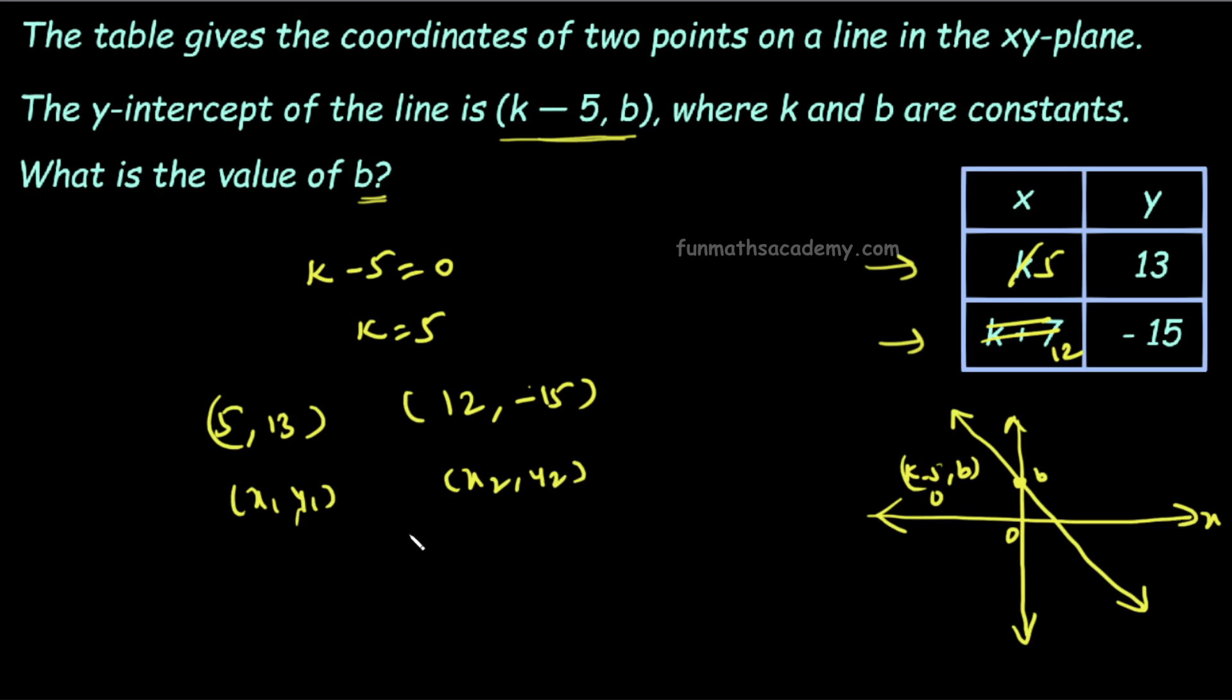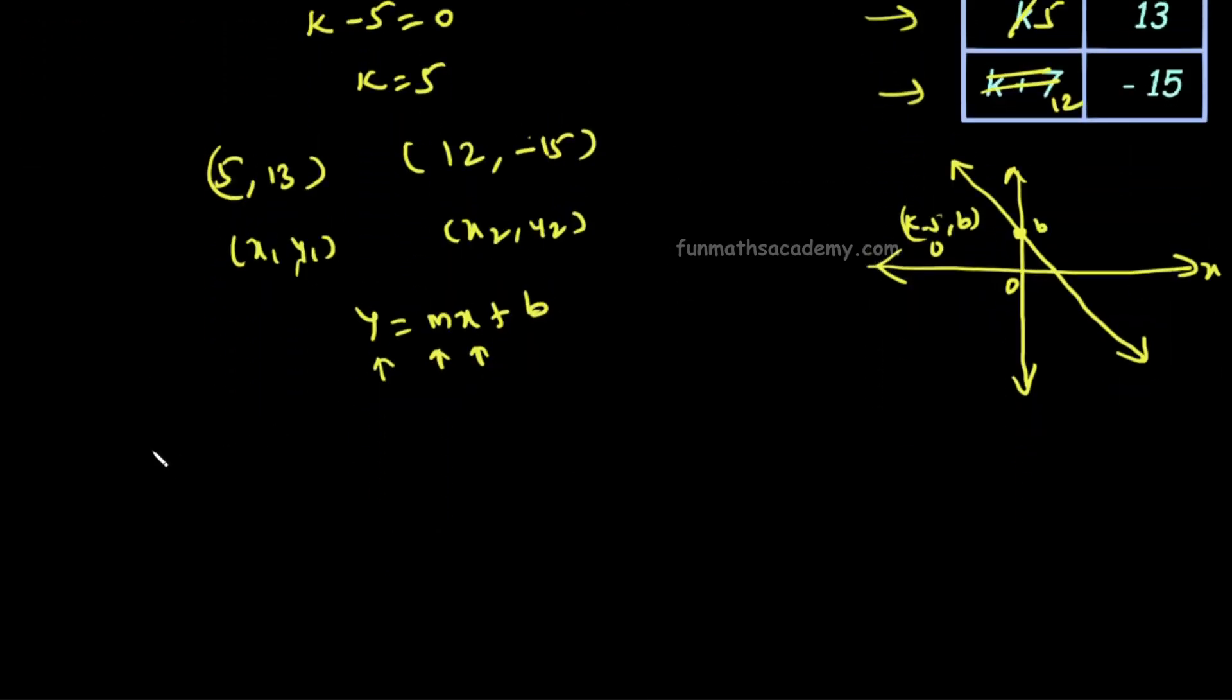The line equation is y equals mx plus b. To find m with 2 points, m value is y2 minus y1 divided by x2 minus x1. y2 is minus 15.